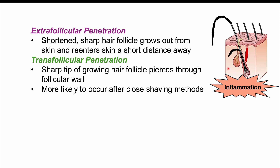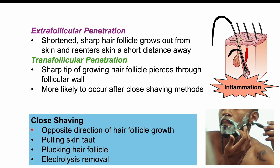Both of these mechanisms can occur through shaving, especially close shaving methods. These include: shaving in the opposite direction of hair follicle growth (against the grain), which gives a closer shave but can leave the hair end inside the skin; pulling the skin taut before shaving; plucking the hair, where a broken end can regrow and penetrate the follicular wall; and electrolysis removal of the hair, which can also lead to this condition.